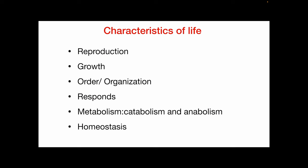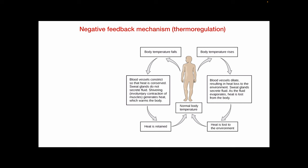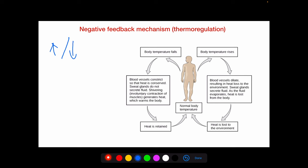There are two main homeostatic mechanisms. The first is the negative feedback mechanism, where a stimulus in the body is either increased or decreased so the body does not allow the stimulus to continue unchecked. If a level is too high, the body brings it down; if too low, it brings it up — hence the term negative feedback.